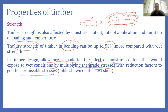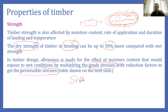In timber design, allowance is made for the effect of moisture content by multiplying grade stresses with a reduction factor to get permissible stresses. These permissible stresses have different values for different conditions. If the timber element is exposed directly to atmosphere, we use different permissible stresses than if it is inside a building. Timber located inside has less exposure and thus higher permissible strength. In India, we use the standard IS883 to design timber elements.